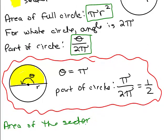The area of the sector will be the part of the circle times the area of the whole circle.